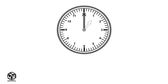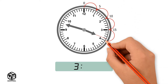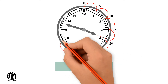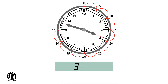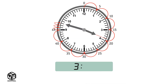Let's do another one. The hour hand points after 3, so the hour is 3. Now let's check the minute hand — it points after 9, so let's count by 5s: 0, 5, 10, 15, 20, 25, 30, 35, 40, 45. Now let's count by 1s to get to our mark. It's 48, so the time is 3:48.